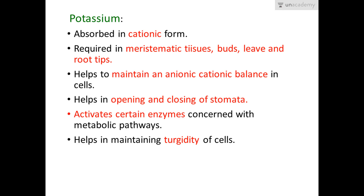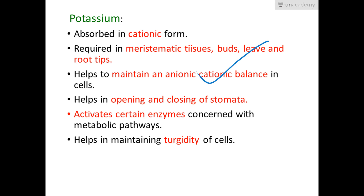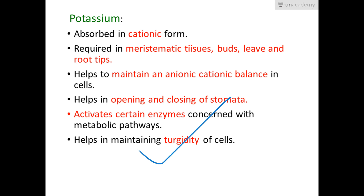Potassium is absorbed as K⁺ (cationic form) and is required in meristematic tissues, buds, leaves, and root tips. It helps maintain anion-cation balance in cells and is involved in the opening and closing of stomata, thereby maintaining ionic balance. It activates certain enzymes concerned with metabolic pathways and helps maintain the turgidity of the cell through osmotic potential.